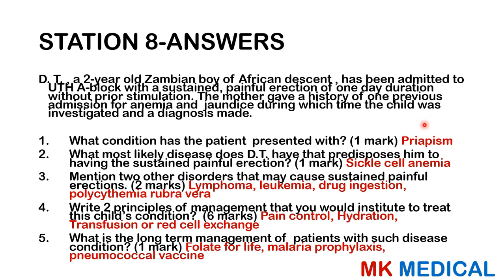This is priapism, most commonly caused by sickle cell anemia. This child has anemia, jaundice, and presents with a persistent painful erection. Priapism is defined as a persistent, purposeless, prolonged, painful penile erection. Other conditions that can cause this include lymphomas, leukemias, drug ingestion, and polycythemia rubra vera. Management principles include pain control, hydration, and transfusion or red cell exchange. Long-term management includes folate for life, malaria prophylaxis, and pneumococcal vaccine.